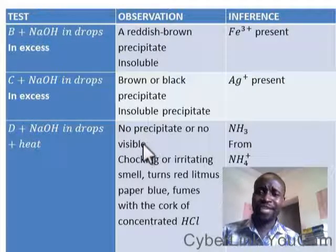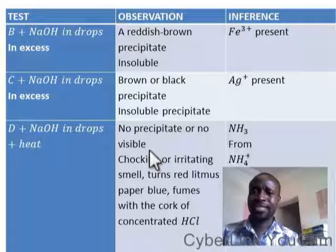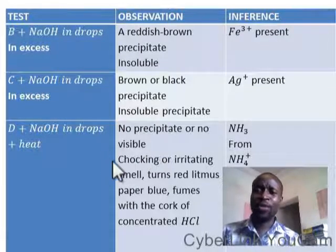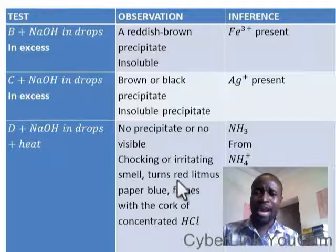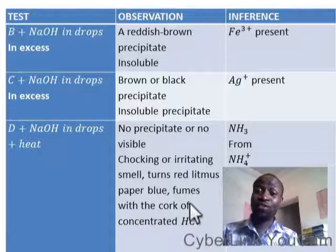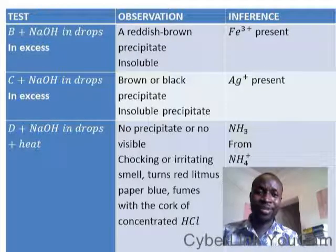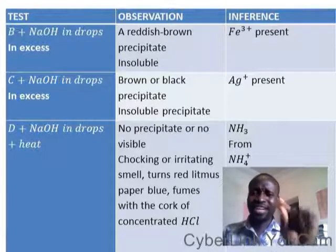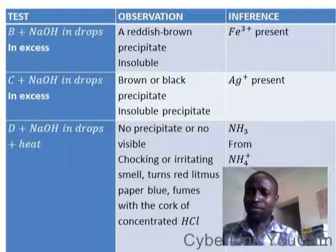To summarize: a sample plus sodium hydroxide in drops — no visible reaction. When you apply heat, no precipitate, but you begin to perceive a choking or irritating smell. Test it with litmus paper: it turns red litmus blue. Bring concentrated hydrochloric acid and it forms a dense white film. You should know you are talking about ammonia. Please learn this. Happy viewing the next video.